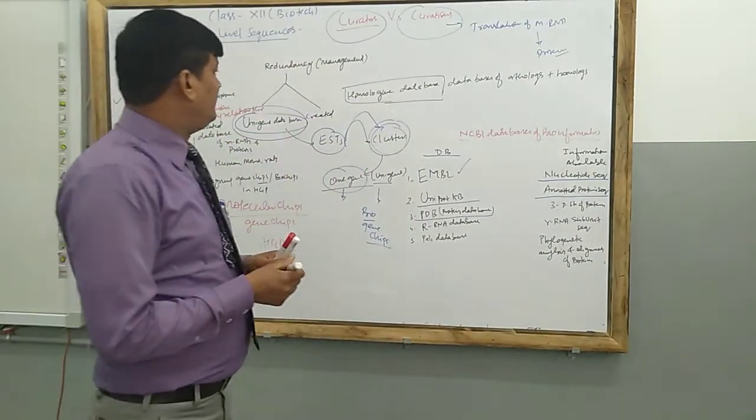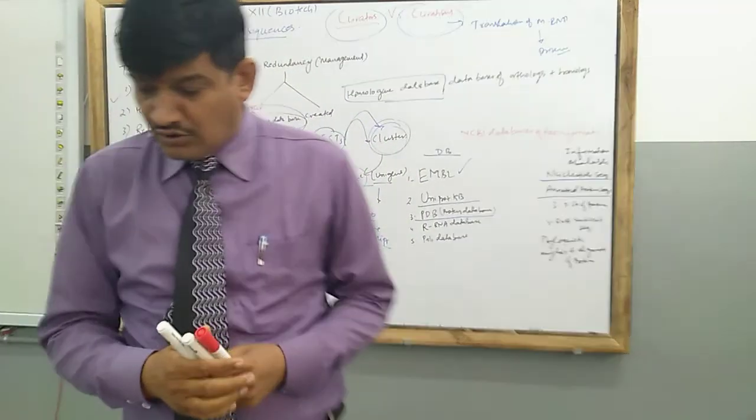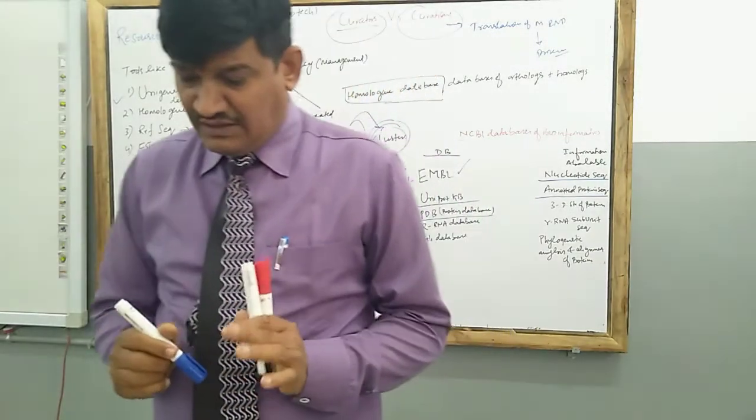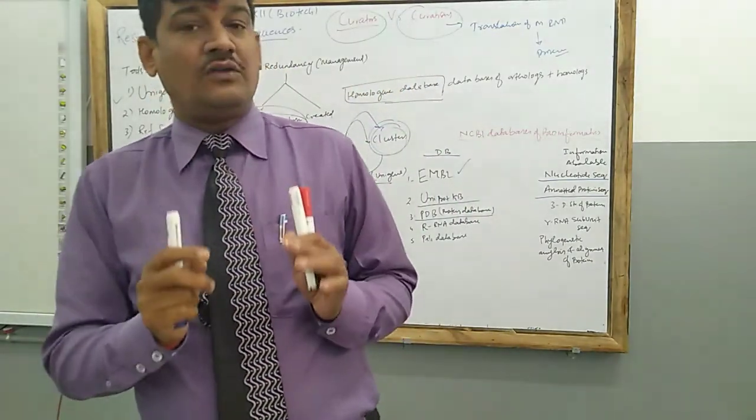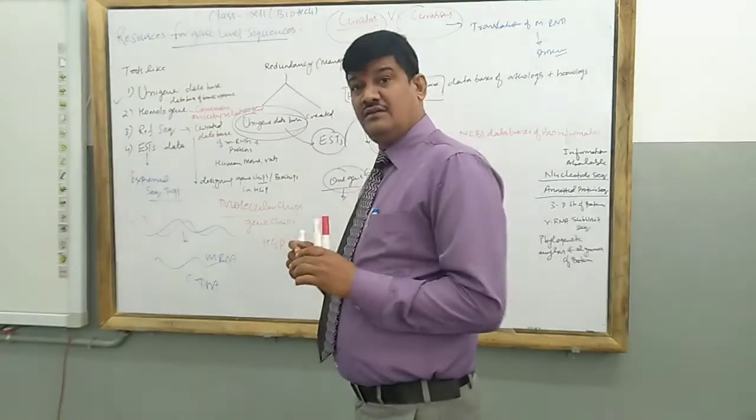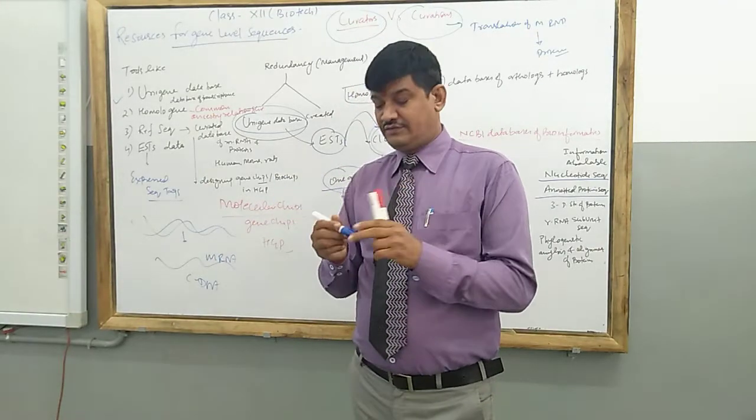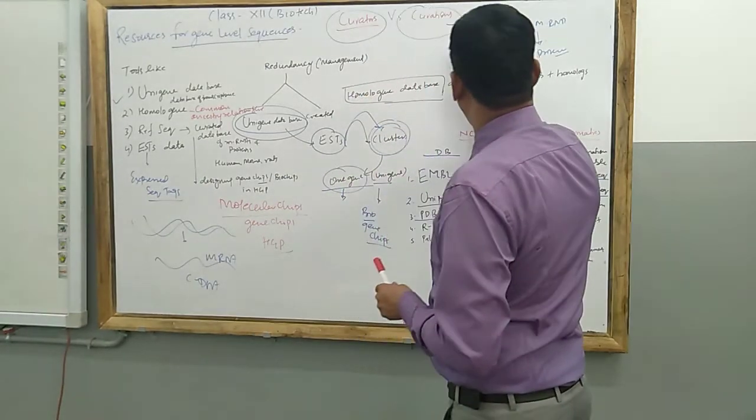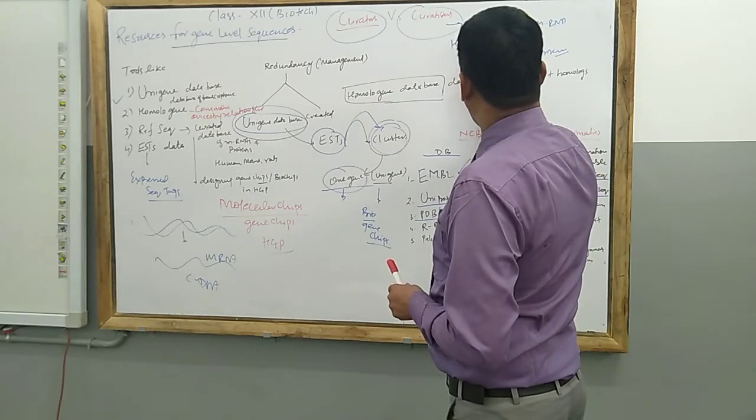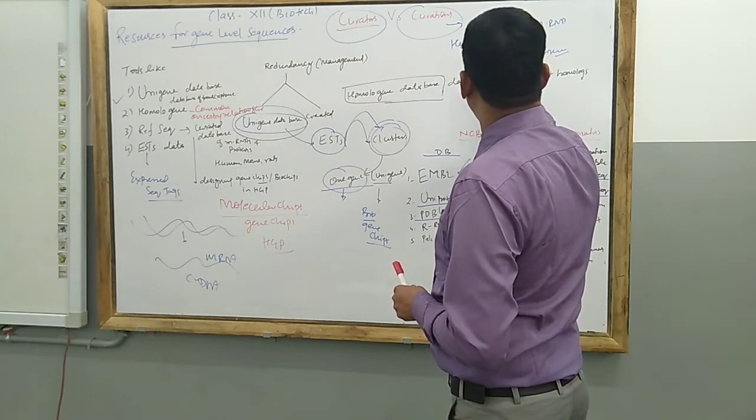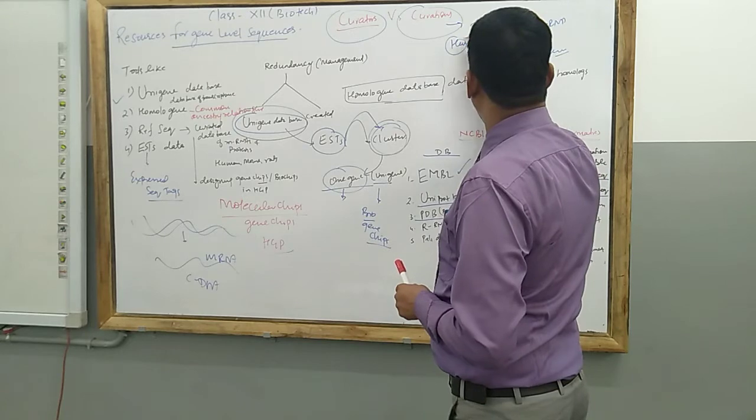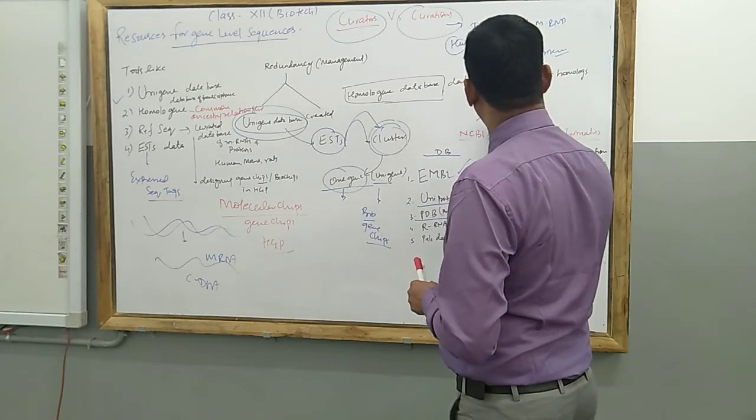Apart from that, there is one word that we call ortholog. What is the meaning of orthology? Orthologs are genes. These are genes which are different. Suppose the human genes are found from a common ancestry.